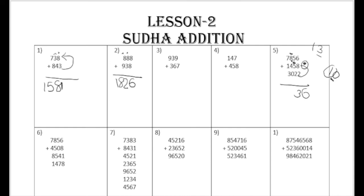Go back to the third position - the hundreds position. 0 plus 4 is 4, 4 plus 8 is 12, and this 1 makes 13. Write sudha here and write 3 here. Then 3 plus 1 is 4, 4 plus 7 is 11, and this sudha will be 1, so it becomes 12.